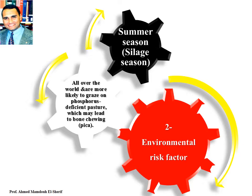Environmental risk factors: This disease is mostly distributed during the silage season in summer. It is present all over the world, and animals are more likely to graze in phosphorus-deficient pastures, which may lead to bone chewing as a pica disease.